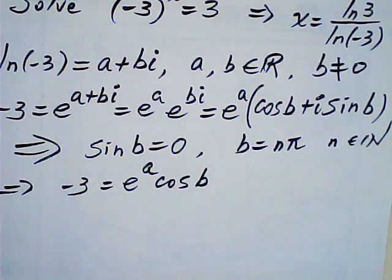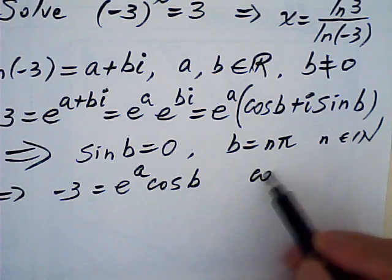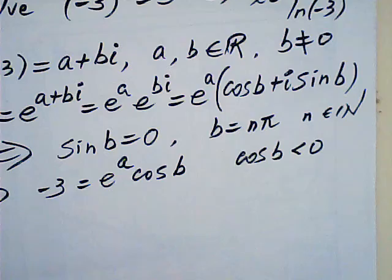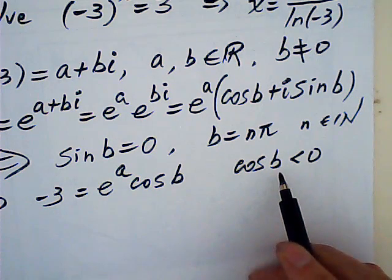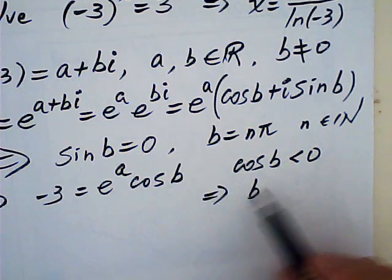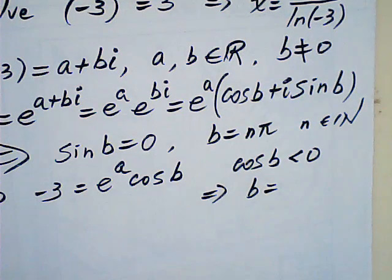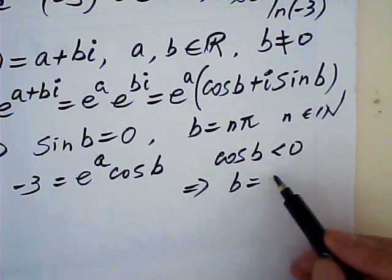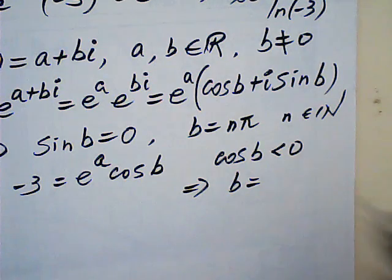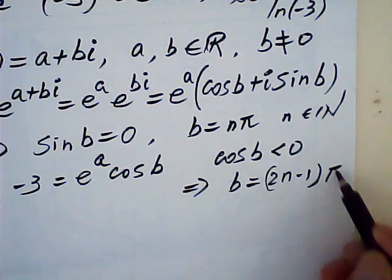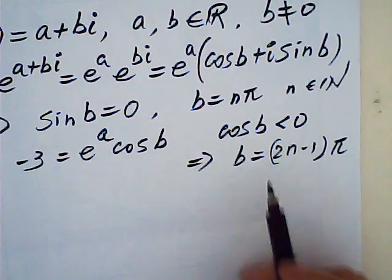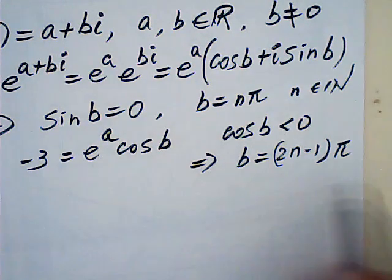Since a is a real number, therefore, this is always positive. If this is positive, this must be negative. Therefore, cosine b must be negative. This is negative 3. If cosine b is negative, then b must be odd powers. So this one, b must be odd powers: pi, 3 pi, 5 pi, and so on. So this will be 2n minus 1 pi. Therefore, b is this.